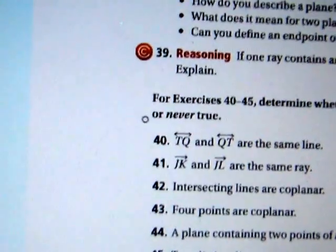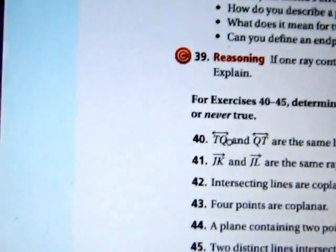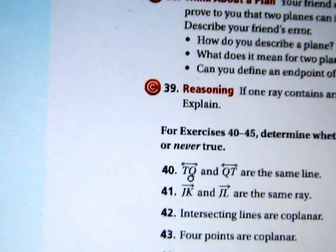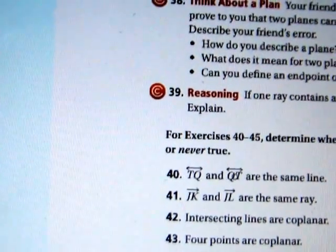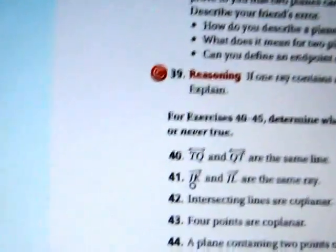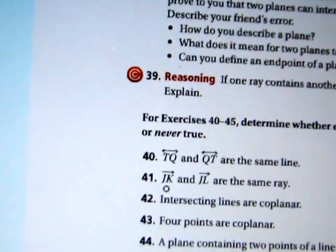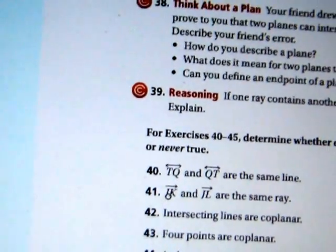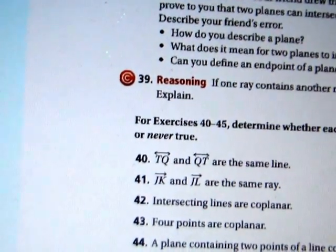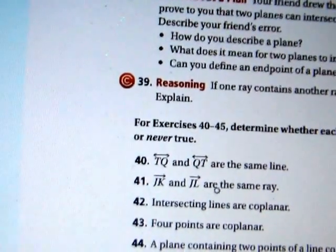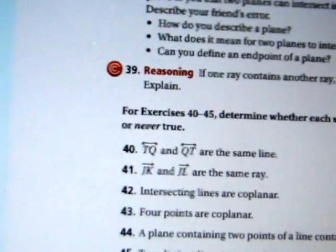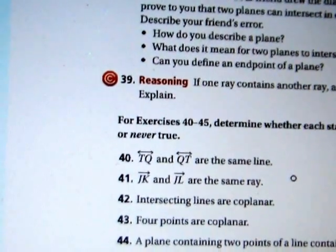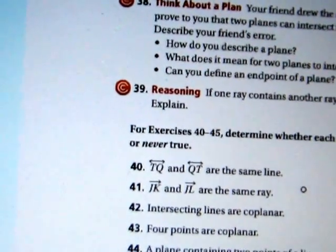Okay. 40 through 45. Determine whether each statement is always, sometimes, or never true. Line TQ and line QT are the same line. They are because they go endless in both directions. There is no beginning and no end, so you can name it in either order. So that is always true. 41. Ray JK and Ray JL are the same ray. Well, they both start at J. So assuming that it can go J through K and L on to forever, then it would definitely be the same ray. If, on the other hand, K is over here and here's J and L is over here on the other side, then they are not the same ray. So that one is a clear example of something that is sometimes true.